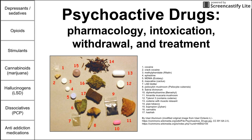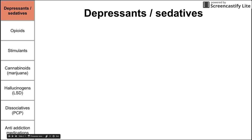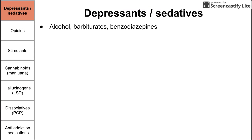Let's begin with the depressants and sedatives. This is the first category of psychoactive drugs. These include alcohol, barbiturates, and benzodiazepines. The mechanism of action for all of these is that they enhance the GABA receptor. GABA is an inhibitory neurotransmitter, so if you enhance the inhibitory neurotransmitter, it's going to have a depressive or sedative effect. That's what happens when you have a couple drinks of alcohol — you're enhancing GABA, which inhibits you, sedates you.